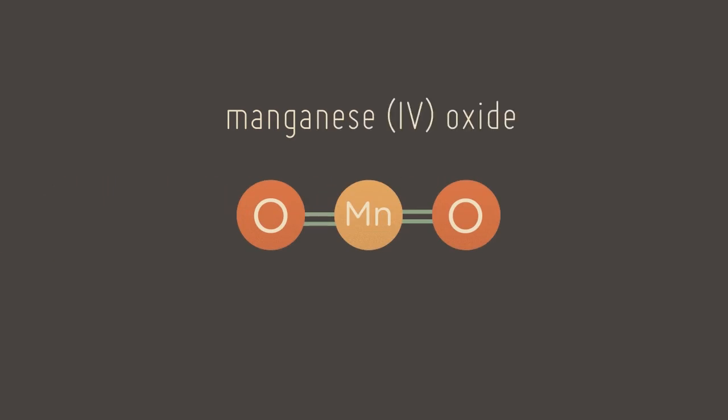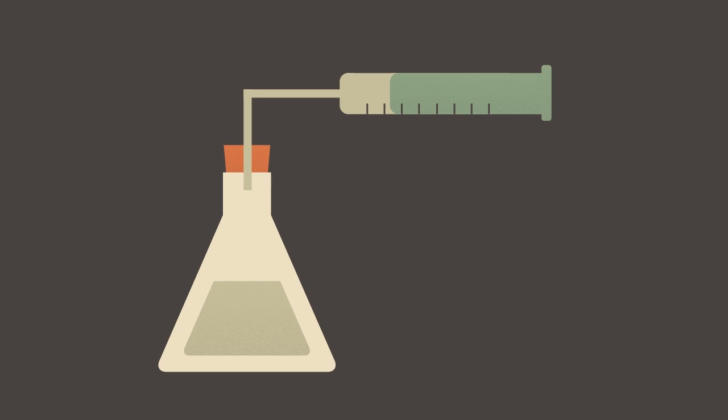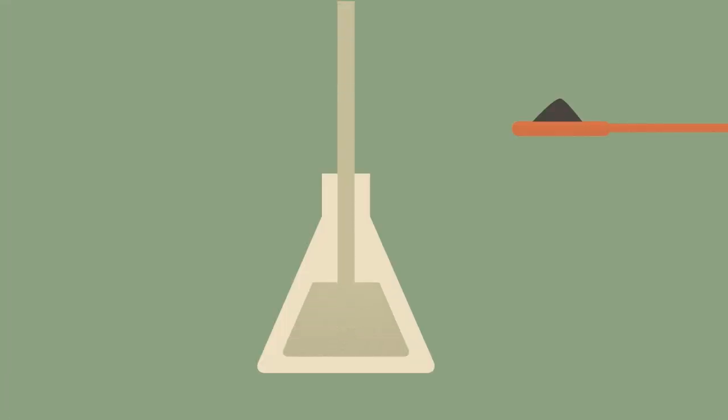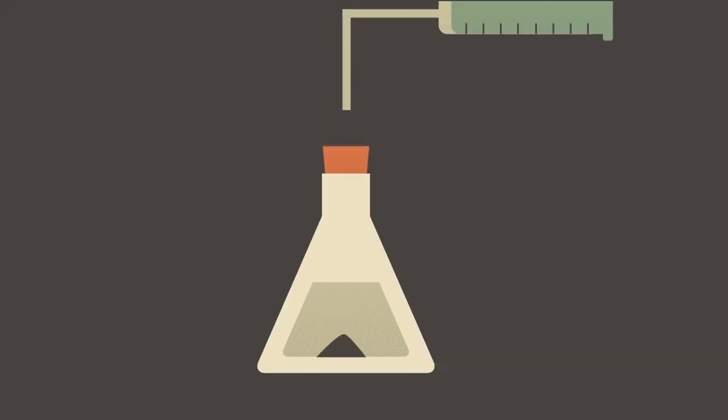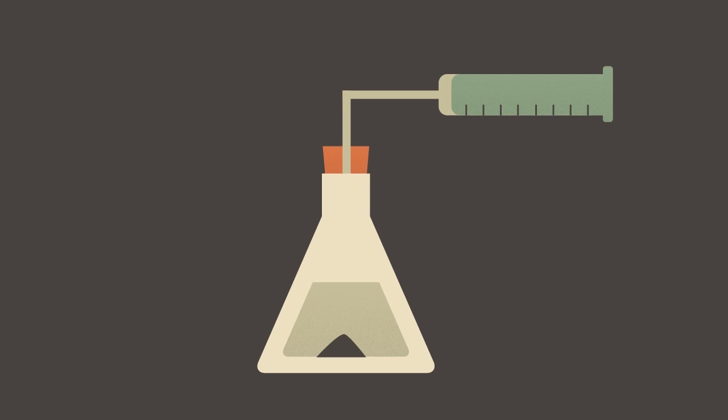This decomposition reaction can be catalyzed by manganese(IV) oxide. The oxygen produced can be measured using a gas syringe. Place a set amount of hydrogen peroxide and add a small spatula of manganese(IV) oxide, a fine black powder. Quickly stopper the flask to prevent any evolved oxygen from escaping into the surroundings.